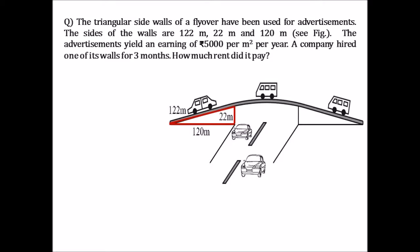The question we are going to solve in this video is: the triangular sidewalls of a flyover have been used for advertisements. The sides of the walls are 122m, 22m, and 120m, as seen in the figure. The advertisements yield an earning of Rs 5000 per meter square per year, and a company hired one of its walls for three months.